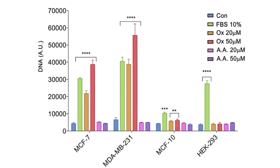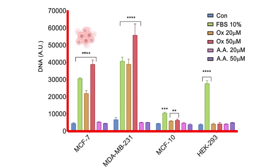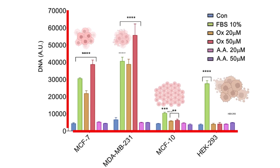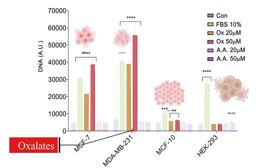This was further evidenced in the cell data. The researchers plated cells in a dish and exposed them to a variety of treatments, measuring DNA levels as a proxy for cell division — the more DNA, the more cells. Four cell lines were examined: MCF7 and MDA-MB231 are human breast cancer cells; MCF10 cells are normal non-cancerous human breast cells; and HEC293 cells are cancerous kidney cells. The orange and red bars are oxalate conditions at varying concentrations, with the red bar having the most.